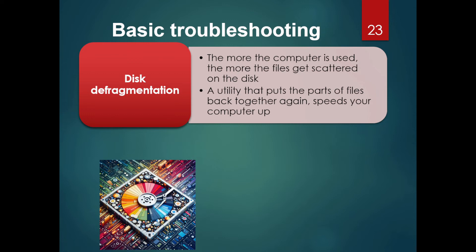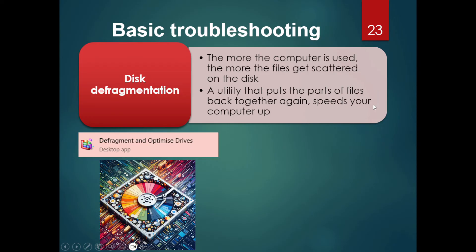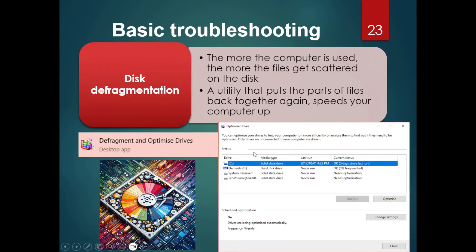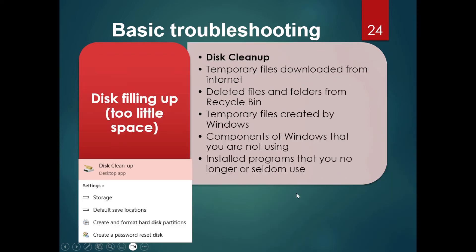Disk defragmentation occurs when files become scattered on the disk, usually from heavy use — particularly on traditional hard drives. This utility puts the parts of files back together and speeds up your computer. When the disk is running low on space, you can use the disk cleanup utility to delete temporary files, downloaded files, and items in the recycle bin, freeing up a little more space.